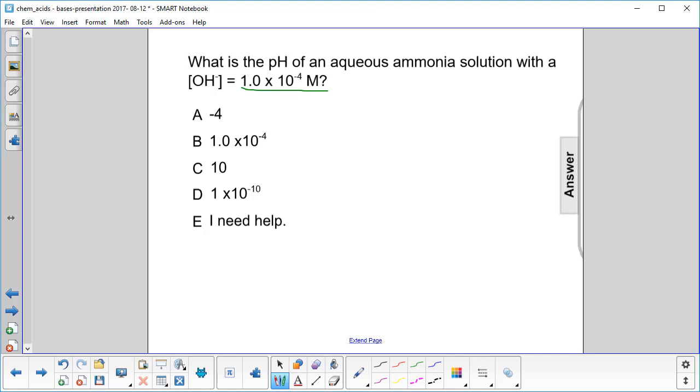What's the log of that number? Well, the log of 10 to the minus four is just minus four. Take the negative of that, you get four. So our POH is four.